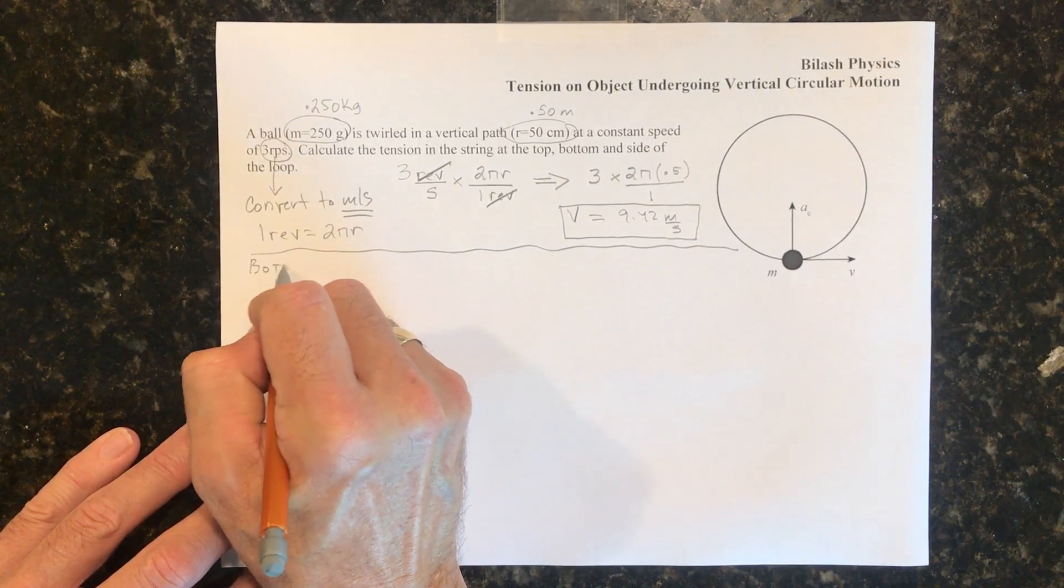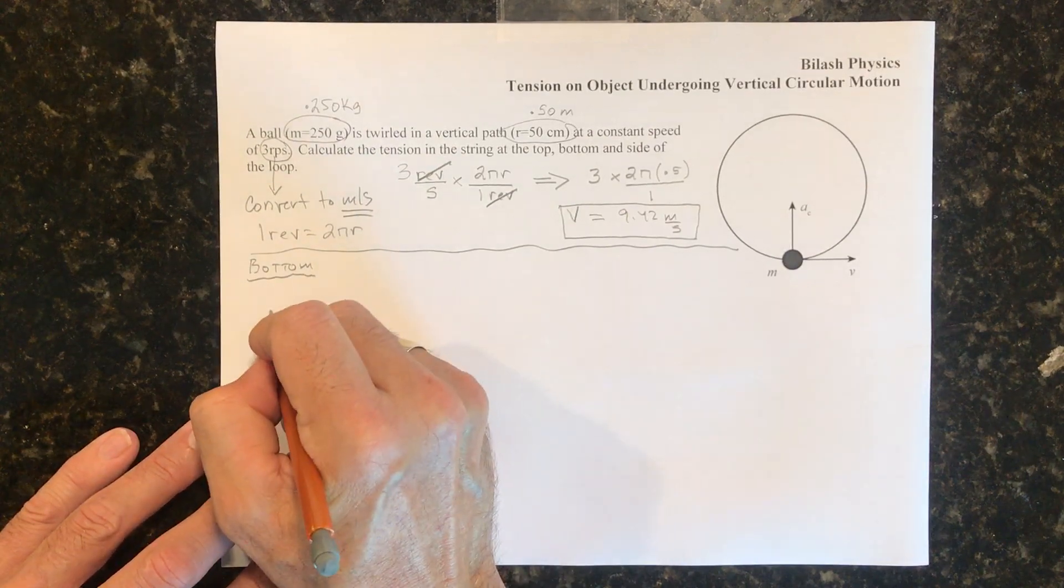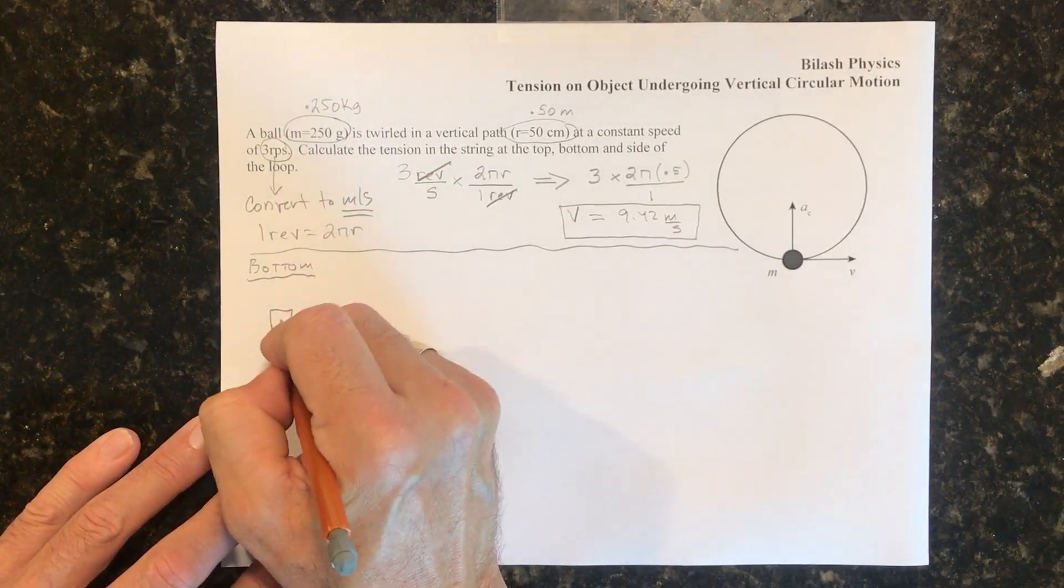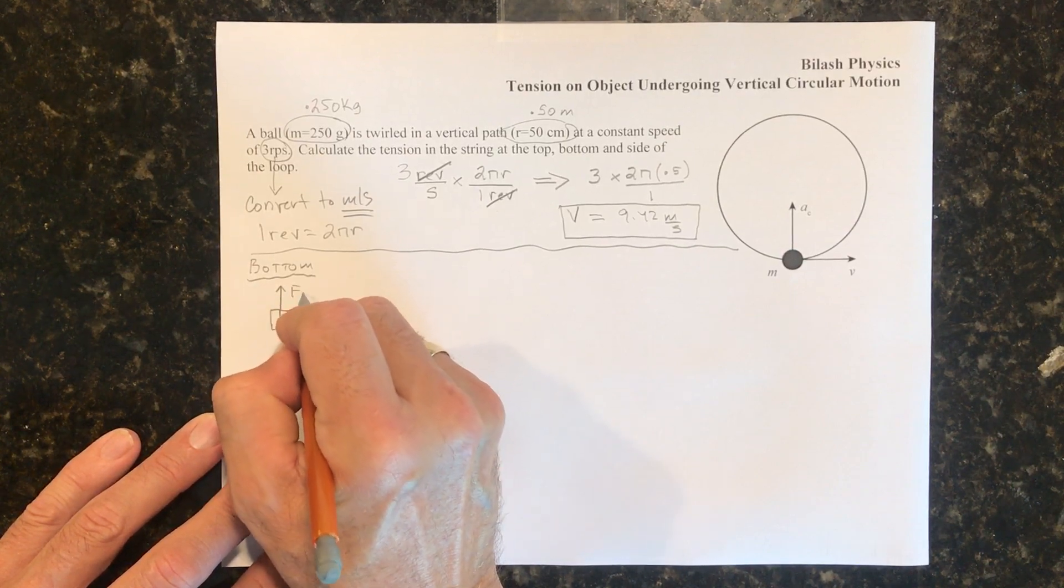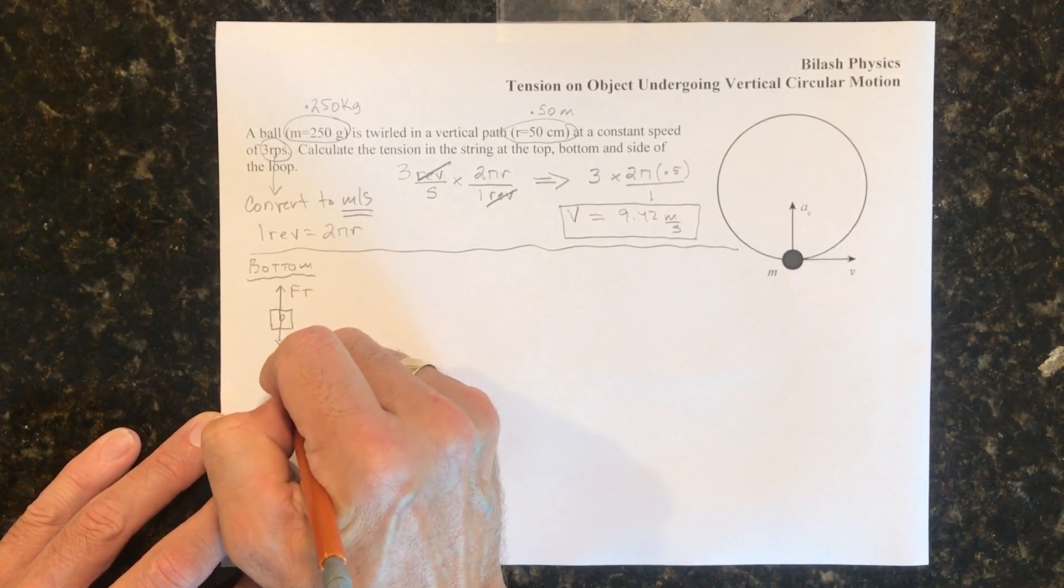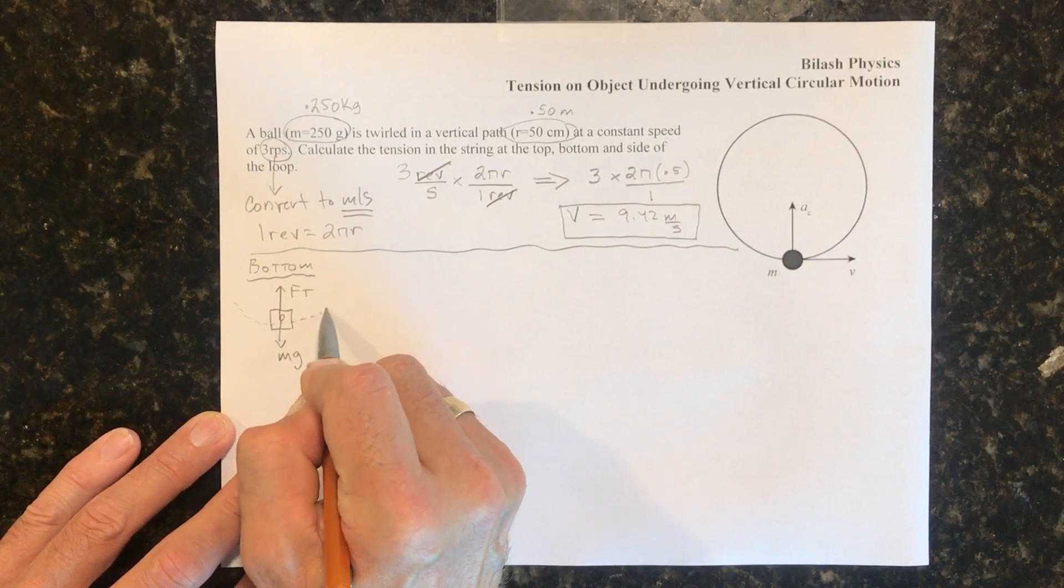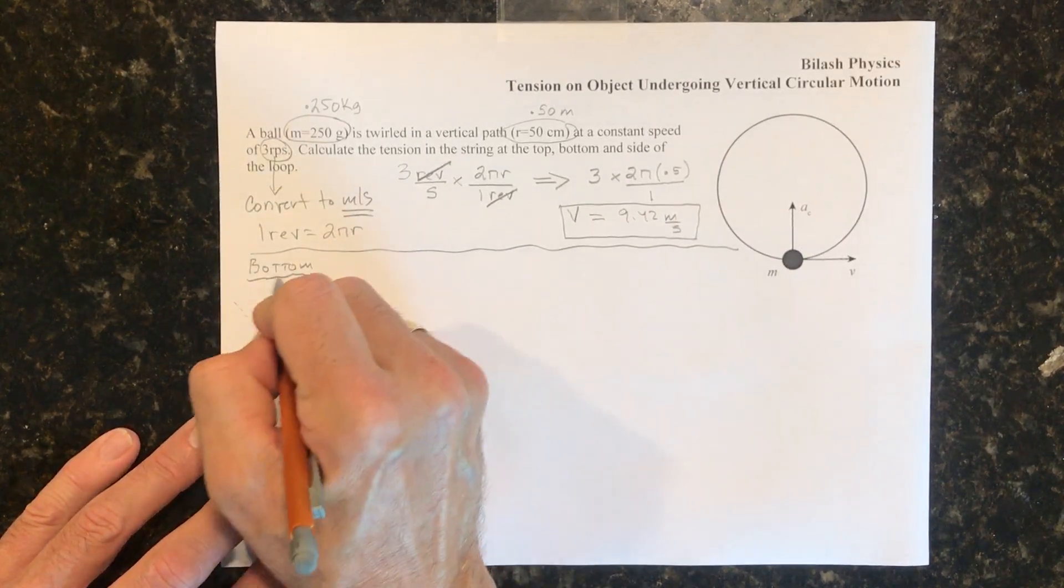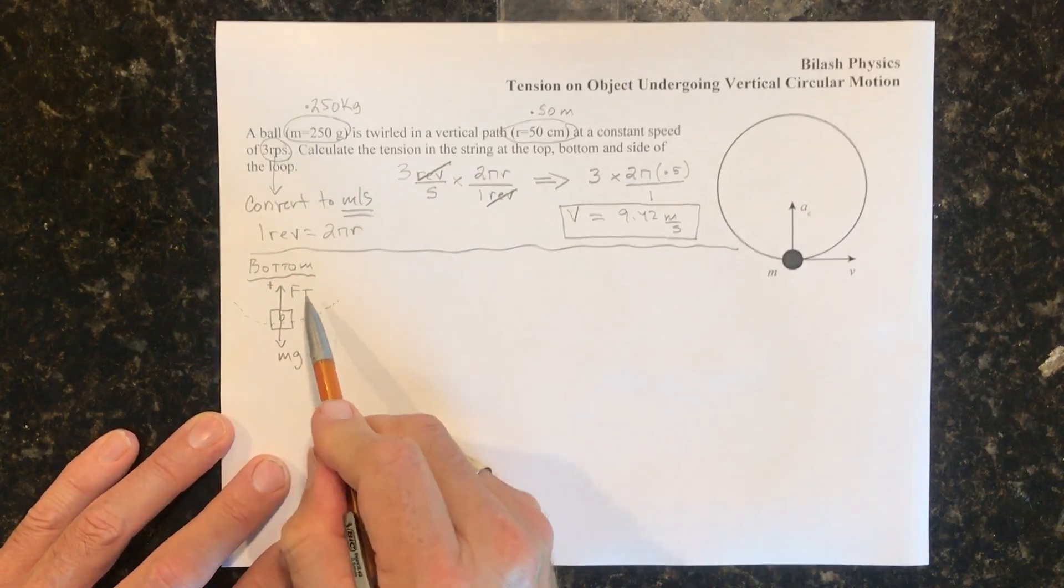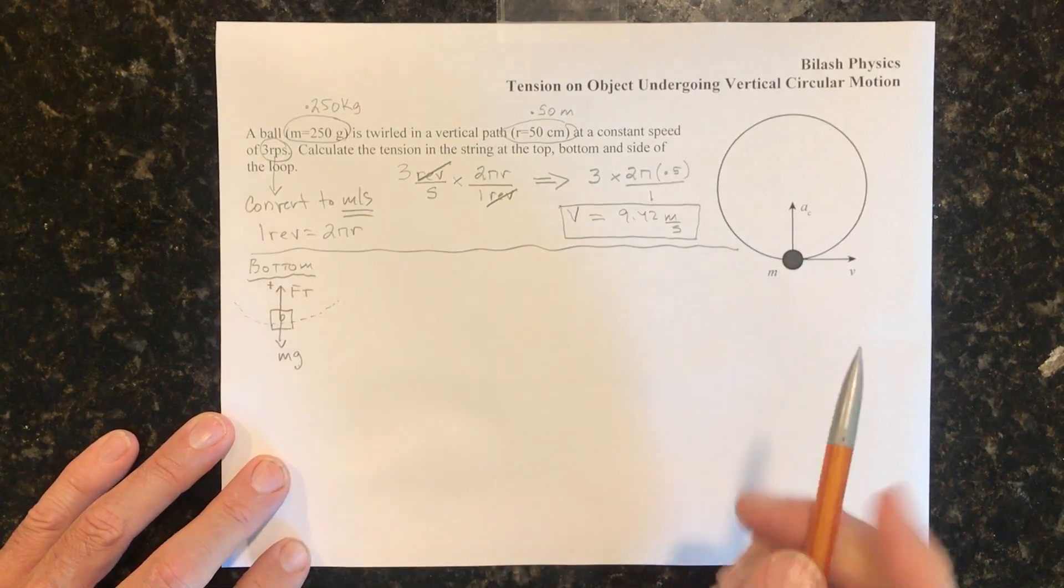So bottom, we need to draw a free body diagram. So we have at the bottom, we have a string which is pulling upward, so that would be tension Ft. Gravity is pulling downward, that would be mg, and it's in a circle. So I'm just going to draw this little circle right here to indicate that the positive direction is towards the center of the circle. So Ft points in the positive direction, mg in the negative direction.